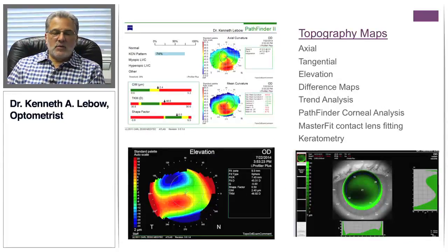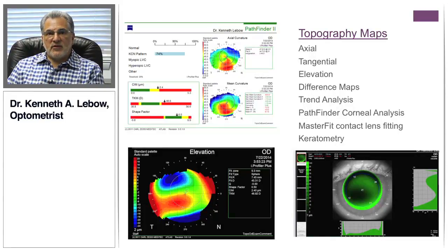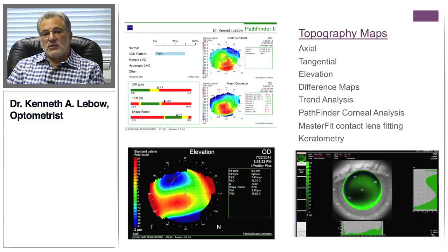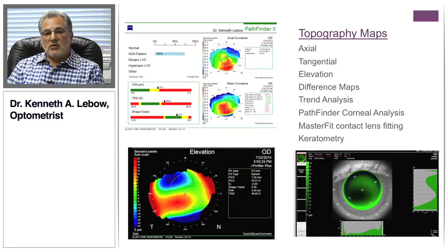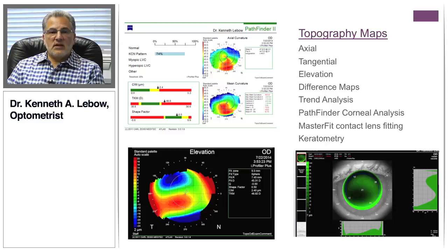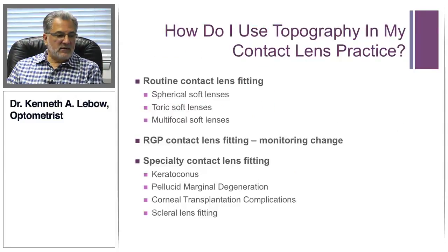Some of the topography maps that are really valuable, in my opinion, are the Pathfinder II map, the MasterFit map — which enables us to work with developing contact lenses for various corneal shapes — and the elevation map. If you haven't input your particular algorithm for fitting contact lenses, we can design it based on the elevation map, and I'll share with you how we're going to do that.